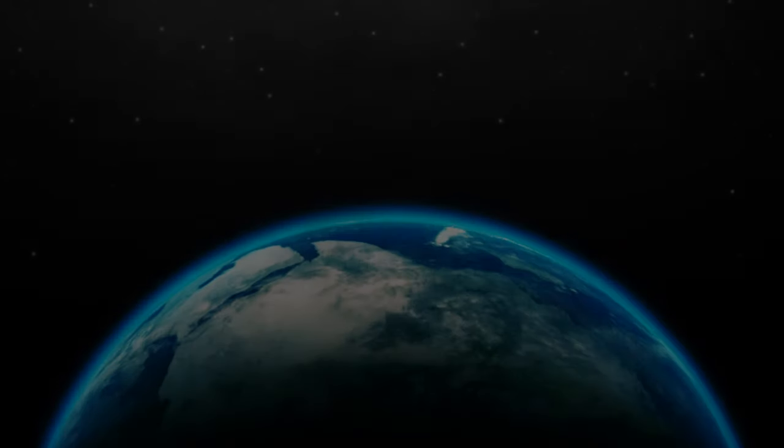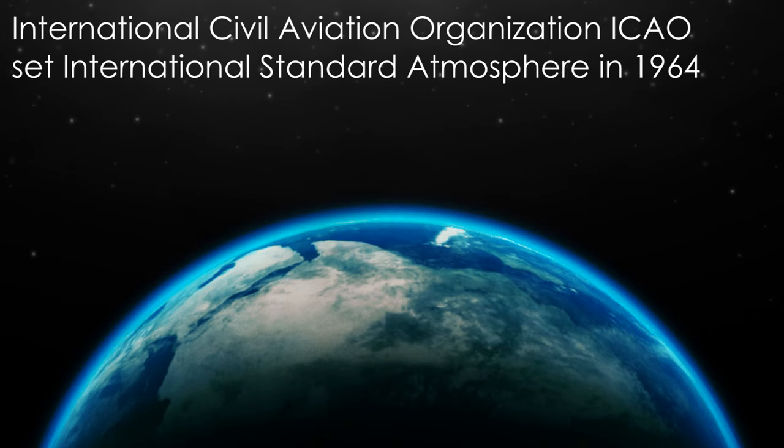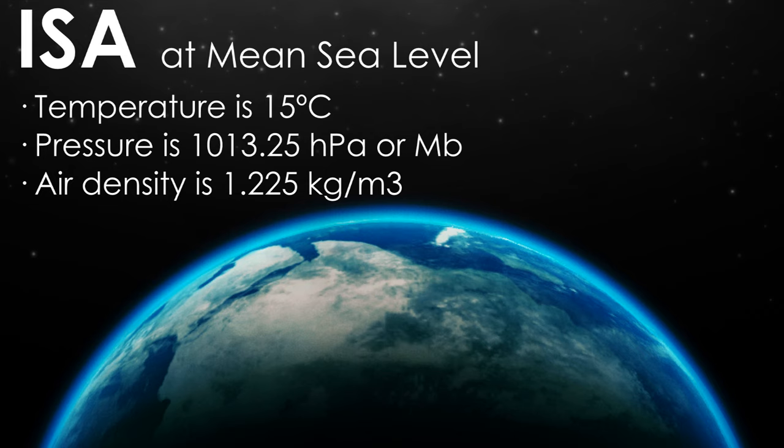The atmosphere changes every day, so a standard atmosphere was set in 1964 by the International Civil Aviation Organization, ICAO, and also known as ISA or International Standard Atmosphere. ISA assumes that at mean sea level, or MSL, the temperature is 15 degrees Celsius, the pressure is 1013.25 hectopascals, or millibars, and the density is 1.225 kilogram per cubic meter.